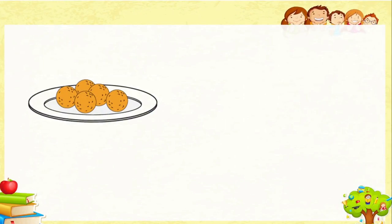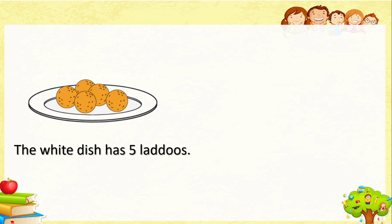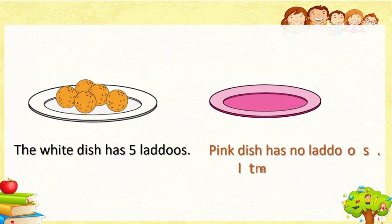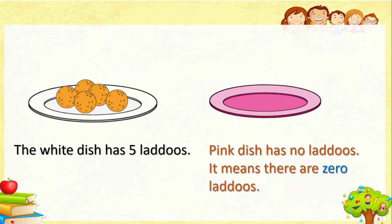Here you can see a white dish with five ladybugs. We can see five ladybugs. Now, one more plate is there — a pink colored plate. Can you see any ladybugs in that? No. The pink dish has no ladybugs. It means there are zero ladybugs. No means zero here.